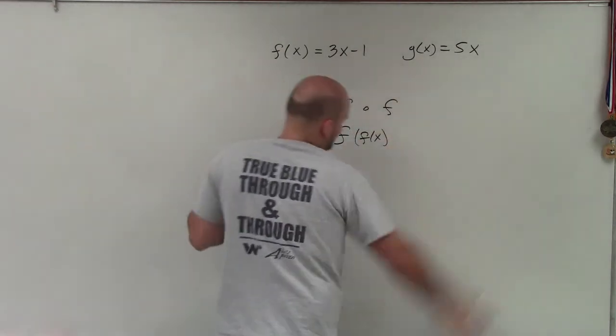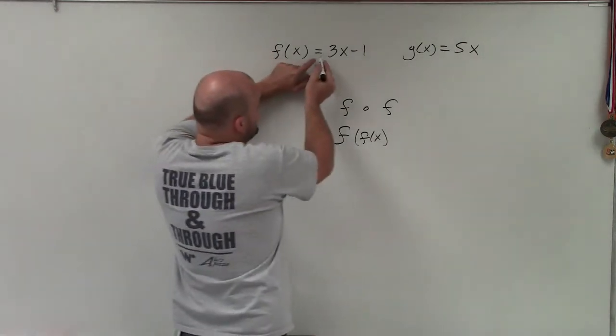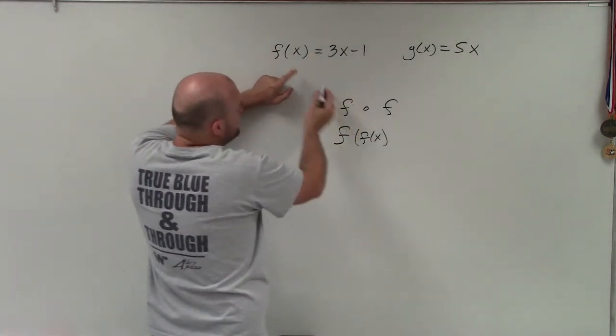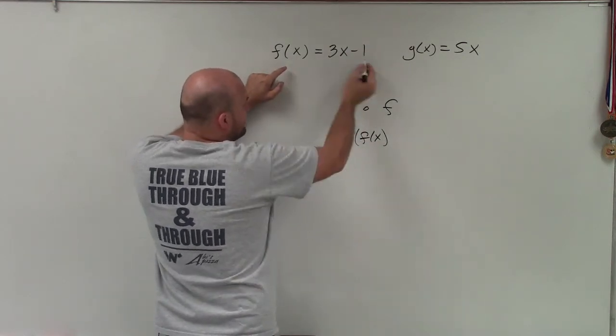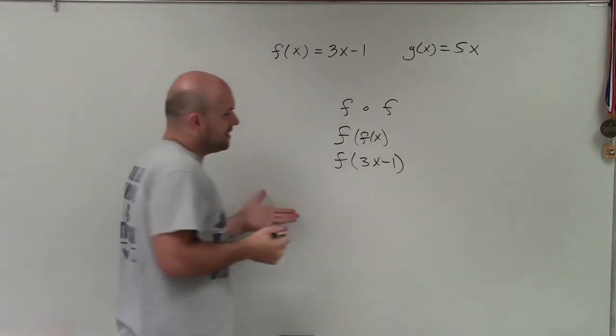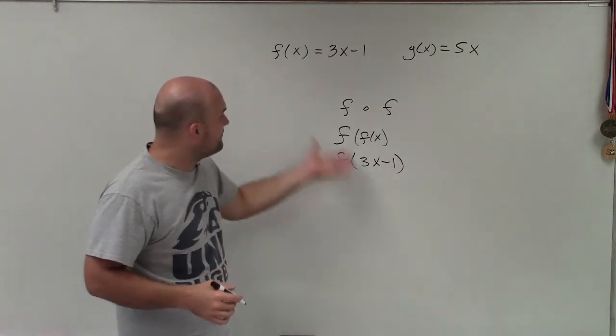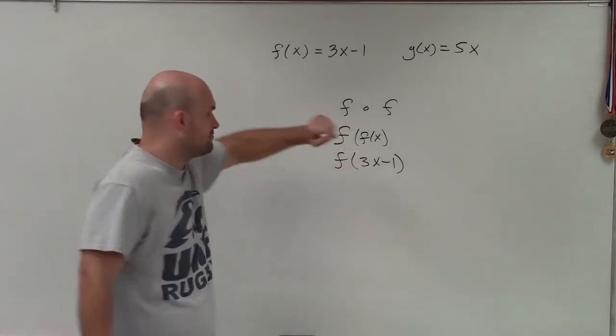So we don't really care about g of x in this case. But let's see, what does f of x actually represent? f of x is equal to 3x minus 1. So what I'm going to do is I'm going to replace f of x here with 3x minus 1. So basically, what I'm doing is I'm just taking my f of x function and evaluating it for 3x minus 1, which is an expression.